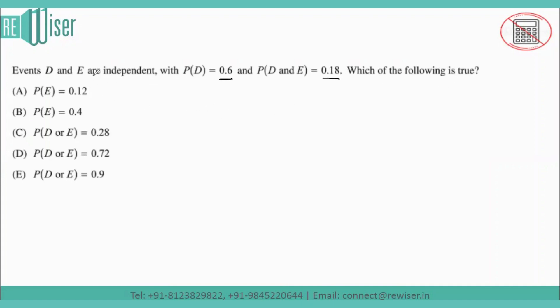Now since they have said that D and E are independent events, that means probability of D intersection E should be the product of two individual probabilities which is P(D) into P(E). So the value of intersection they have given is 0.18 and the probability of D is 0.6. So the probability of E that we got equals 0.3.